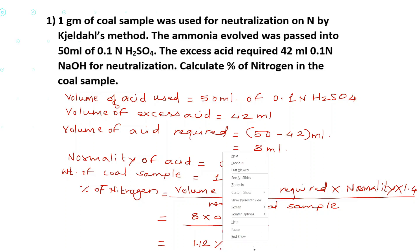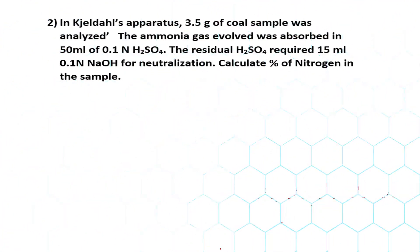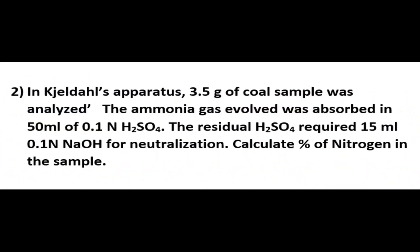This was the first numerical. Now the second numerical: 3.5 grams of coal sample was analyzed. The ammonia gas evolved was absorbed in 50 ml of 0.1 normal H₂SO₄. The residual H₂SO₄ required 15 ml of 0.1 normal NaOH for neutralization. Calculate the percentage of nitrogen in the coal sample.